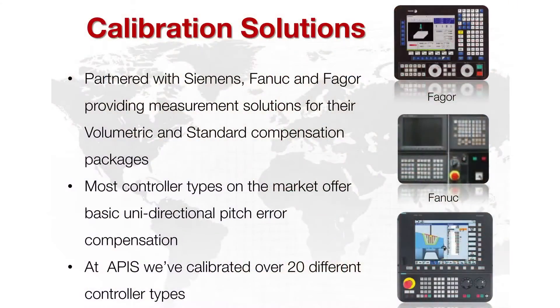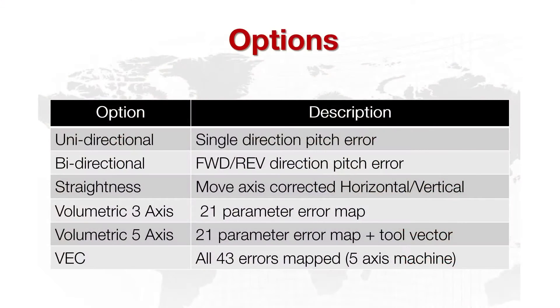Some of the calibration solutions we provide — API services — support the Fagor control, the Siemens control, the Fanuc, and about 20 other different types of controllers. Options found on controllers today for calibration may range from unidirectional, which compensates for pitch error in a single direction; bidirectional, which compensates for pitch error in both directions; straightness, which compensates for errors in axis alignment; and volumetric three-axis, which corrects for all 21 parameter errors.